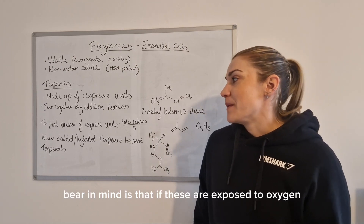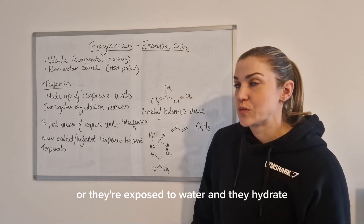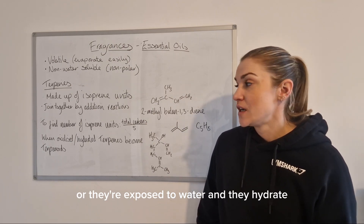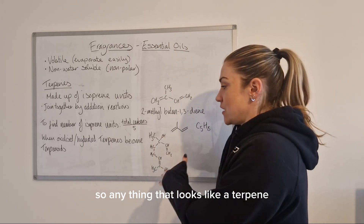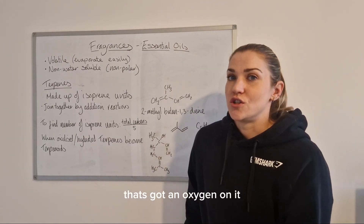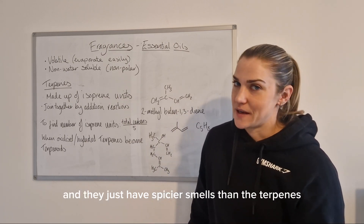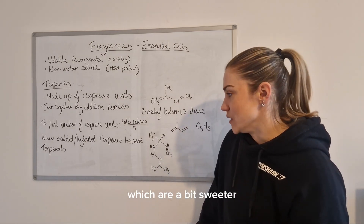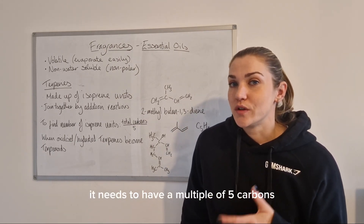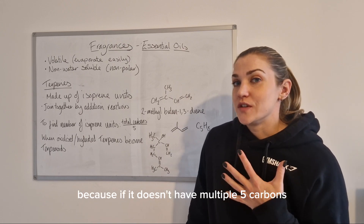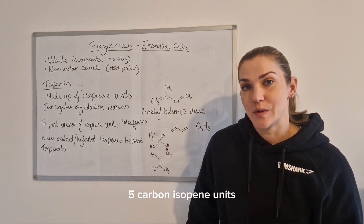If terpenes are exposed to oxygen and oxidise, or exposed to water and hydrate, they become terpenoids. Anything that looks like a terpene but has an oxygen in it is technically classed as a terpenoid, and they tend to have spicier or sweeter smells than terpenes. Also, for something to be classed as a terpene, it must have a multiple of five carbons — if it doesn't, it can't be made up of five-carbon isoprene units.